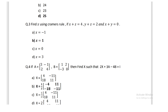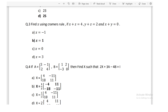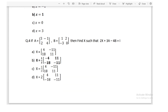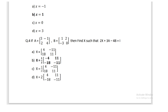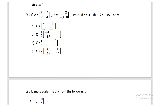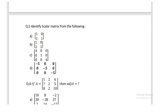Find x using Cramer's rule for the system: x + z = 4, y + z = 2, x + y = 0; x = 1. Given matrices A and B, find x such that 2x + 3A − 4B = 1; the answer is option B. Identify the scalar matrix from the given options; D is the scalar matrix.